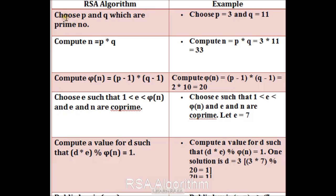In the first step, we have to choose the values of P and Q, which must be prime numbers. In the second step, we have to calculate the value of N, which is P into Q. In the next step, we have to compute the value of φN, which is equal to P minus 1 into Q minus 1.